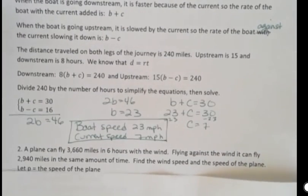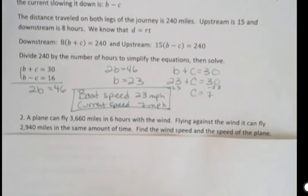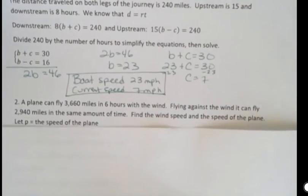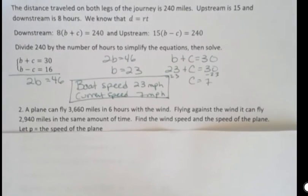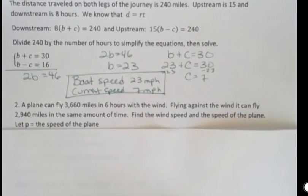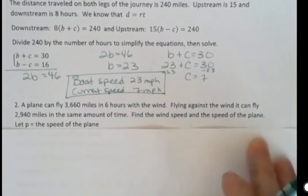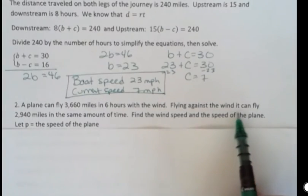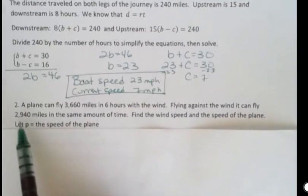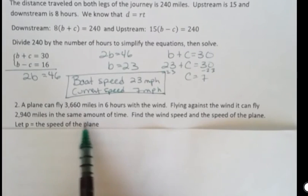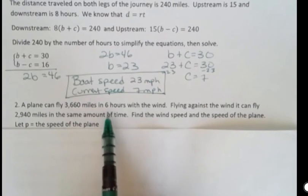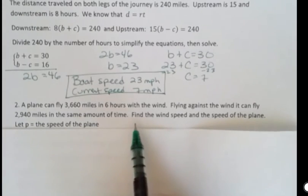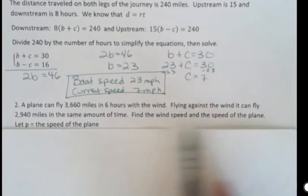All right, let's look at one more of those. A plane can fly 3,660 miles in 6 hours with the wind. Again, we're talking about going against the wind and with the wind, just like we were with the current. Flying against the wind, it can fly 2,940 miles in the same amount of time. Notice here that the times are the same. The distances are different. Find the wind speed and the speed of the plane.